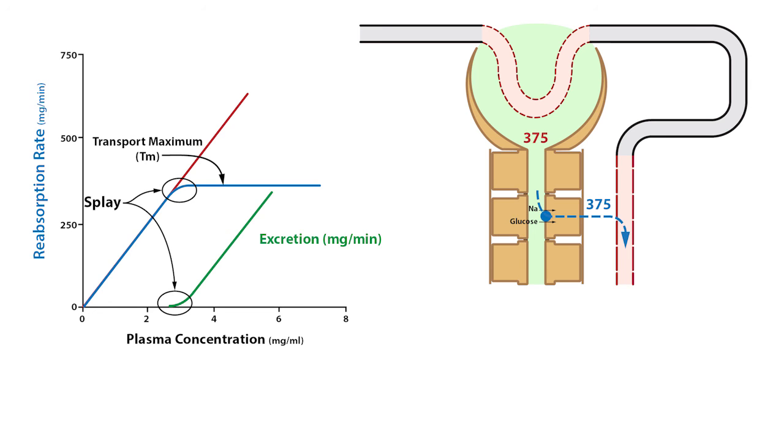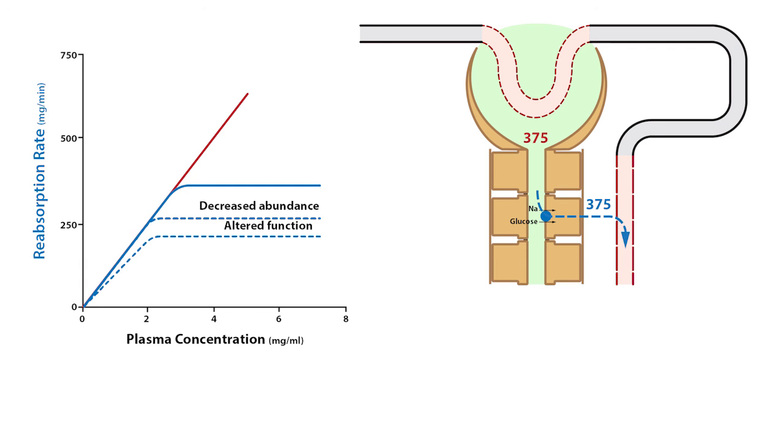Besides transporter saturation due to increased filtered load, genetic defects and transport inhibitors can reduce the transport maximum while leaving reabsorption rate unaffected. However, genetic mutations that alter transporter function will decrease the transporter maximum and the reabsorption rate.